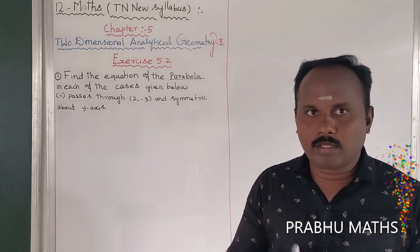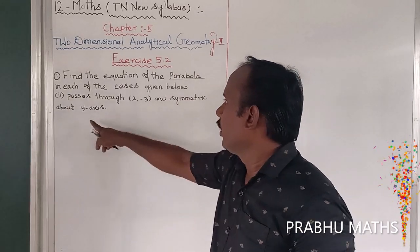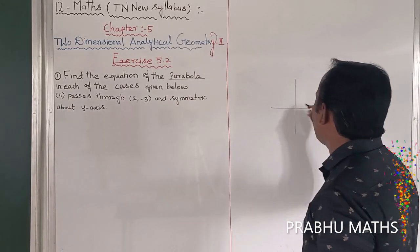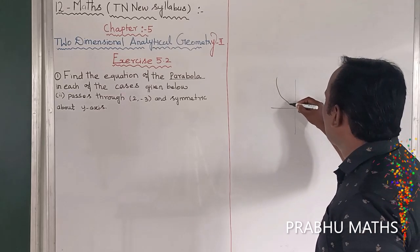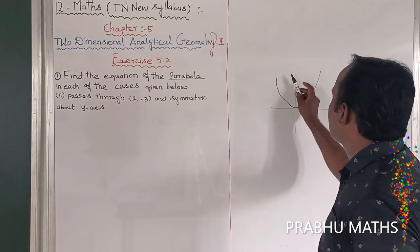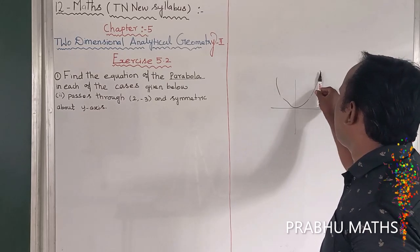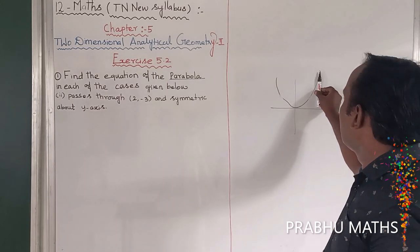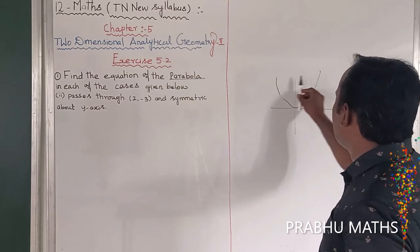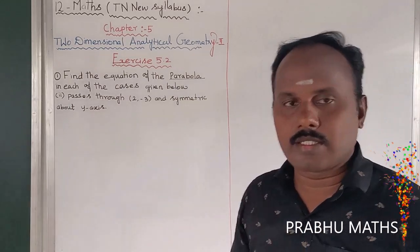Why? Because symmetric above the y-axis. Symmetric above the y-axis means that is the corresponding area of two sides — that is called symmetric. So for this side equal to for this side. That is called the symmetric consideration.